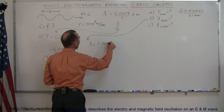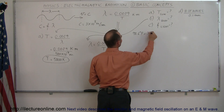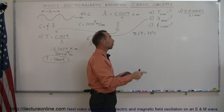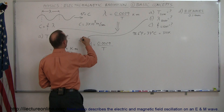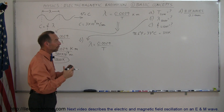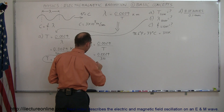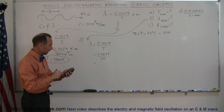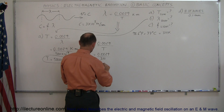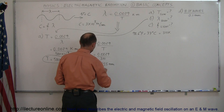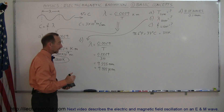Using Wien's Law: 0.0029 divided by the temperature. Converting 98.6°F — which equals 37°C — to Kelvin by adding 273, we get about 310 Kelvin. Plugging that in: 0.0029 divided by 310 gives a wavelength of 9,355 nanometers, or 9.355 micrometers. That's quite a bit longer than visible light, so this is definitely infrared radiation.